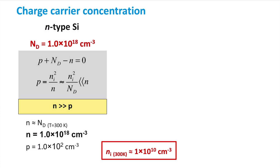We can equate the electron concentration to the donor concentration. N is then equal to 1×10¹⁸ electrons per cubic centimeter, since each phosphorous atom donates one mobile electron. We now have N, but to calculate P we use the mass action law. With this relationship we can easily calculate that the concentration of holes P is equal to 100 holes per cubic centimeter. When we compare the two, we clearly notice the enormous difference in the number of electrons and holes present in this N-type silicon.